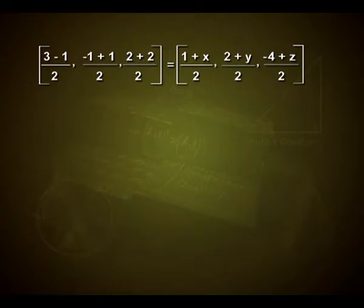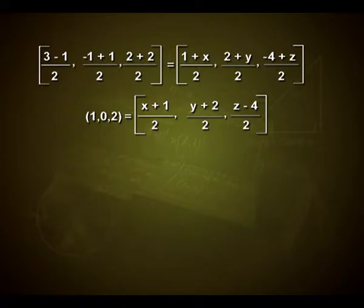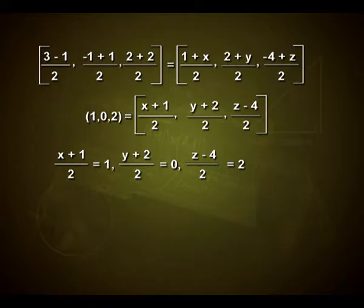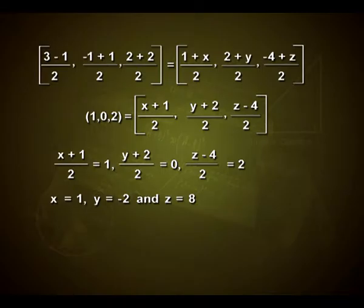We equate the coordinates of x, y, and z respectively. We get (x+1)/2 = 1, (y+2)/2 = 0, and (z−4)/2 = 2. Solving gives x = 1, y = −2, and z = 8.